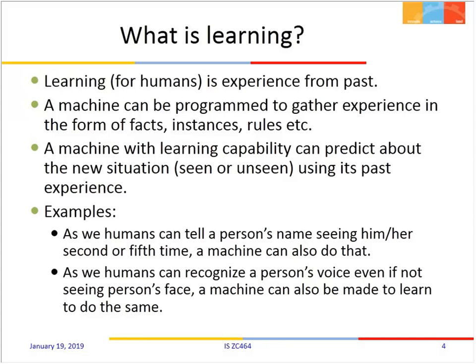A computer being trained through machine learning is like a small child. Some situations are used to tell the machine what the real world is about. The real world for the machine revolves around only the kind of application or learning you are expecting from it, and experiences revolve around that.